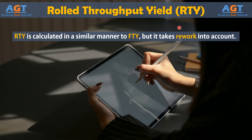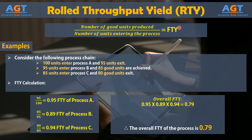Rolled throughput yield is calculated in a similar manner to first-time yield, but it takes rework into account. If process A, from the first-time yield example in the last lecture, only achieved a yield of 95 because someone reworked 5 items to make them good, then rolled throughput yield calculations add 5 instances of rework into the ratio.